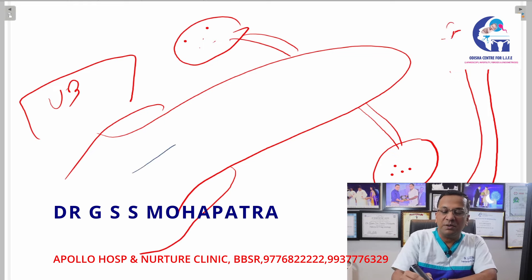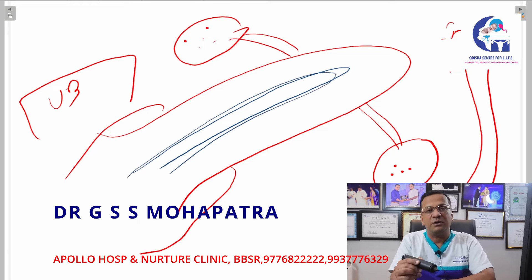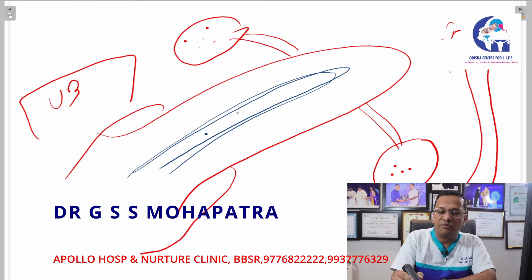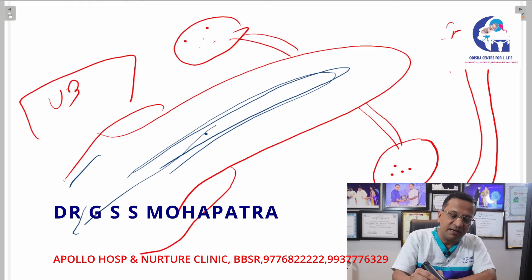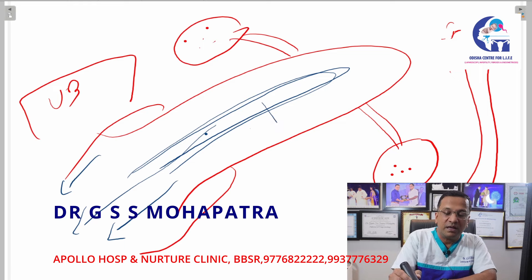The uterus has an inner lining called the endometrium — that is the word endometriosis. What is the endometrium? During periods, the menses — some amount of the uterine lining, blood — is shed through the vagina. This layer is the endometrium.